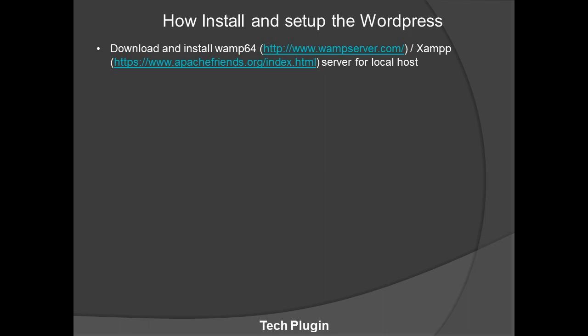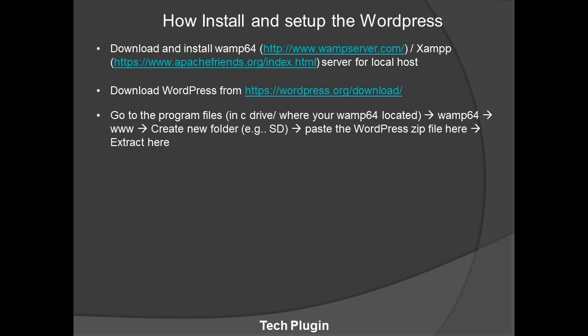Take a monthly backup so that if any problem occurs, you can delete the current version and restore your backup and your site will work fine. There is also WAMP.net, and I'm providing setup videos for WAMP64 and XAMPP. After setting up localhost, the second step is to download WordPress. All download links are in the description box.